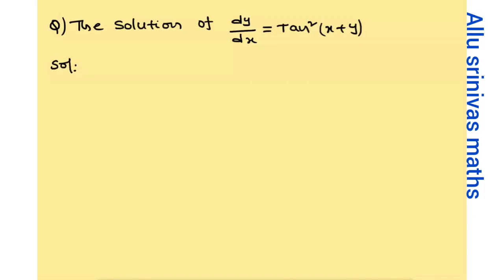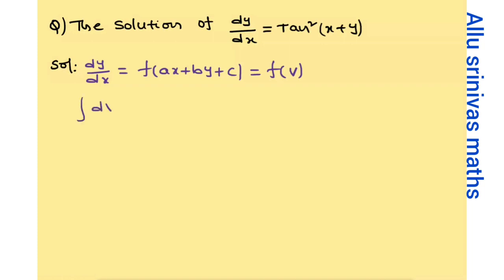Hi everyone, welcome to Allo Srinivas mass class. Now we discussed super shortcuts of variable separables in differential equations. So we already discussed variable separables and we will continue. dy/dx equals f of (ax plus by plus c), which equals f of v — same model, and without trigonometric functions. In case of trigonometric functions, it is necessary.